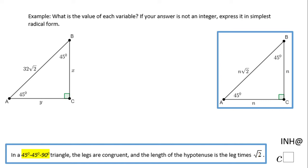Welcome or welcome back to I Need Help at C Squared. In this example we need to find the value of each variable. We notice we have X and Y here, and also we notice this is what we call a special right triangle. We see 45-45 and this angle is 90, so we can use this property here.